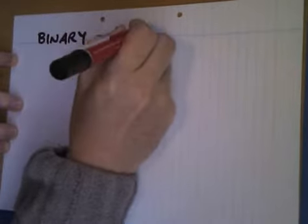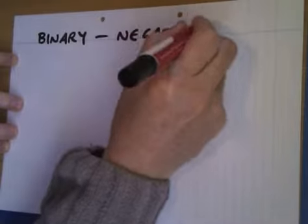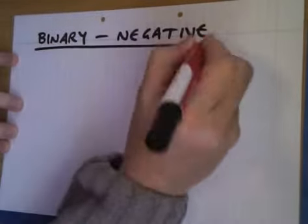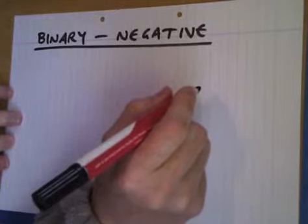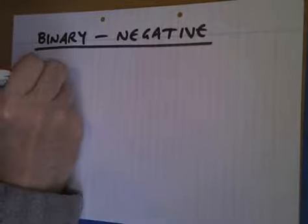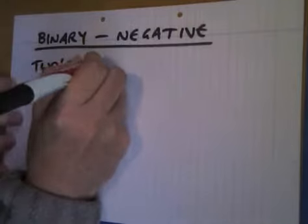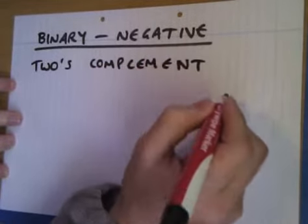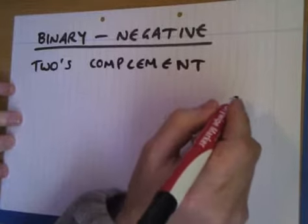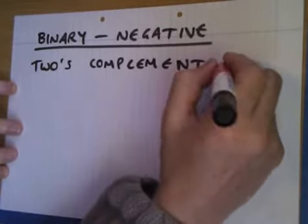OK, now how to represent a negative binary number. And the one method, there are lots, but one method I'm going to show you is called two's complement. Odd name. Very odd name, anyway. This is called the two's complement method.